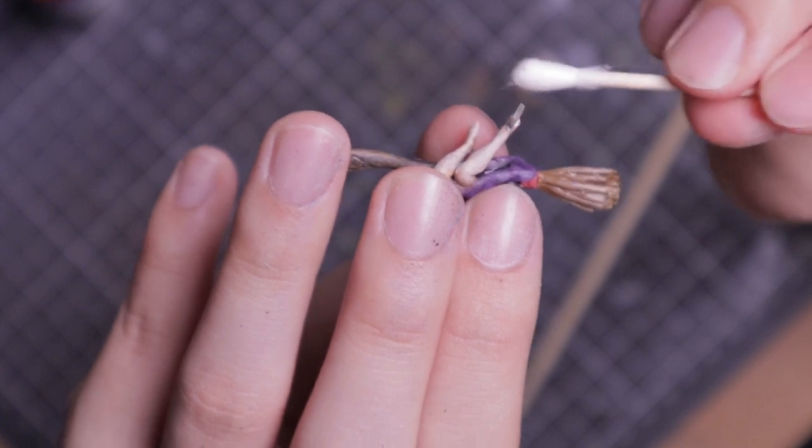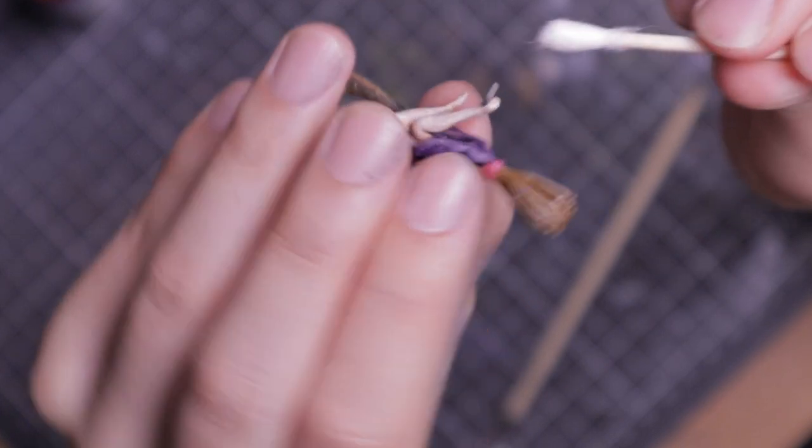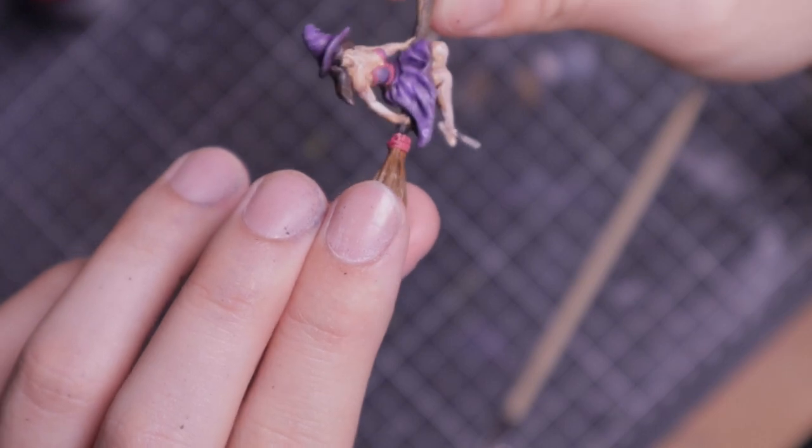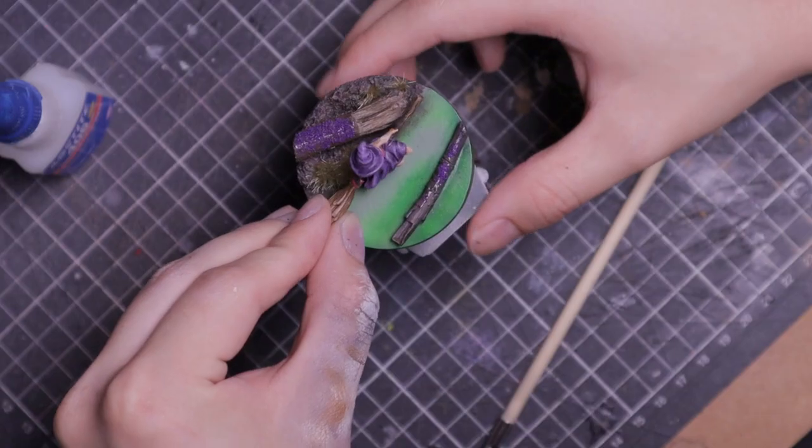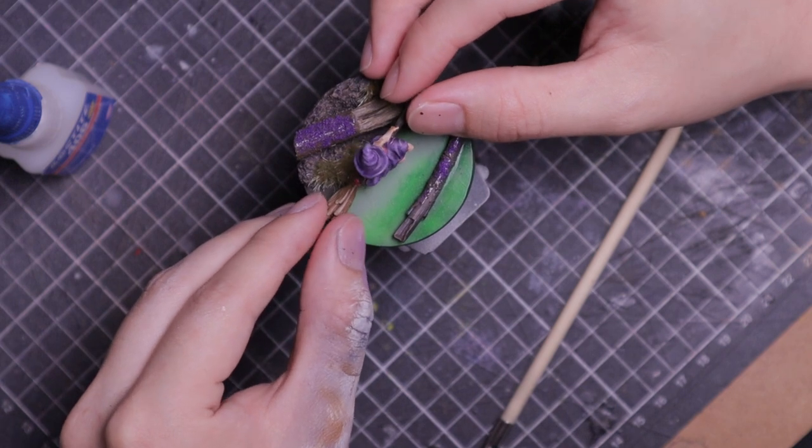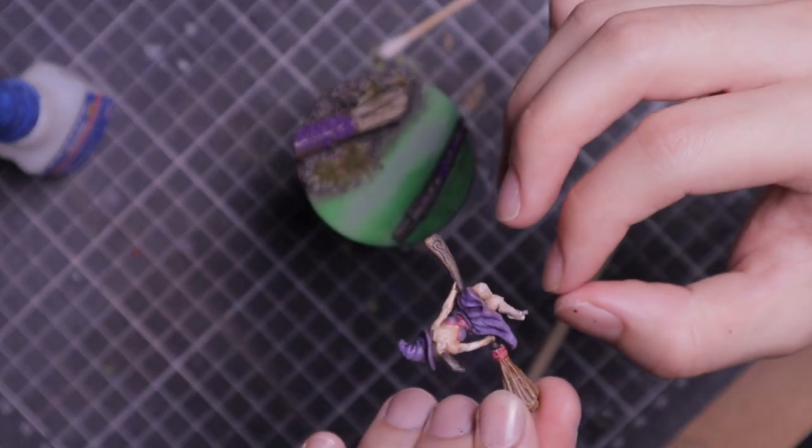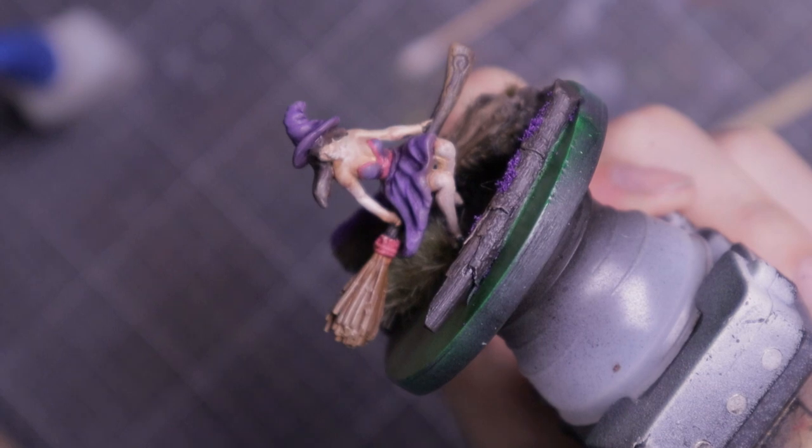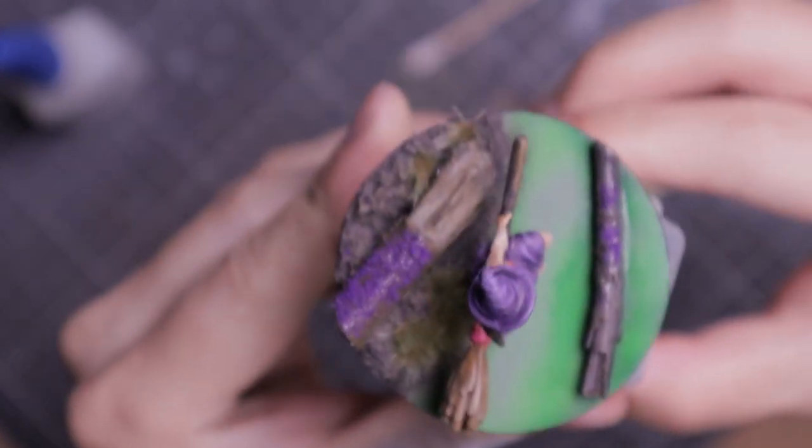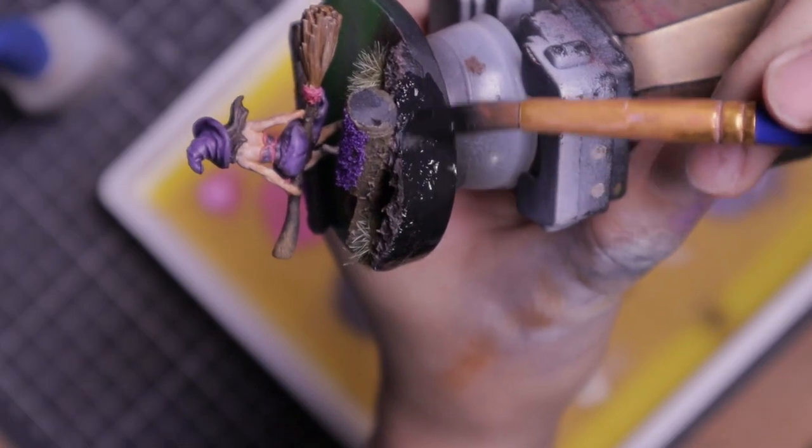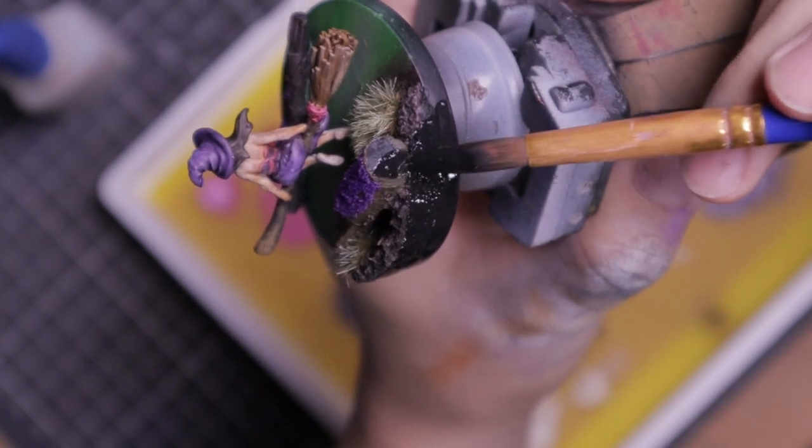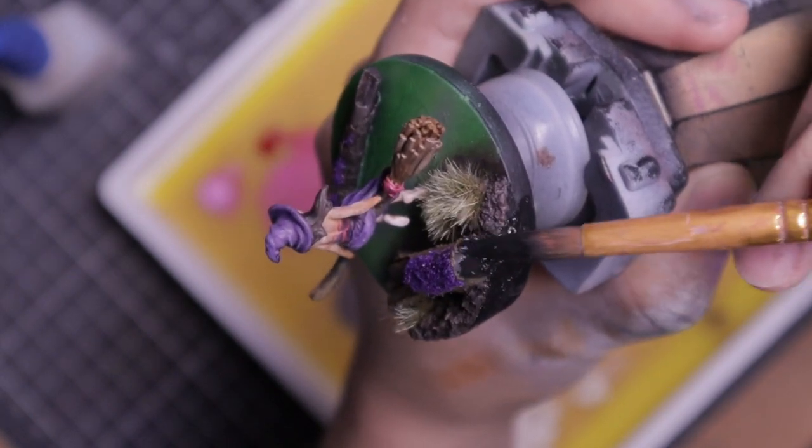Before I glue it to the base, I cleaned the pin with iso. So that it stays clear when I glue it to the base. As I was gluing it to the base, I broke the pin. Fortunately, it was salvageable. Then I paint the rim of the base black. Including the branch and the log to simulate a cross section.